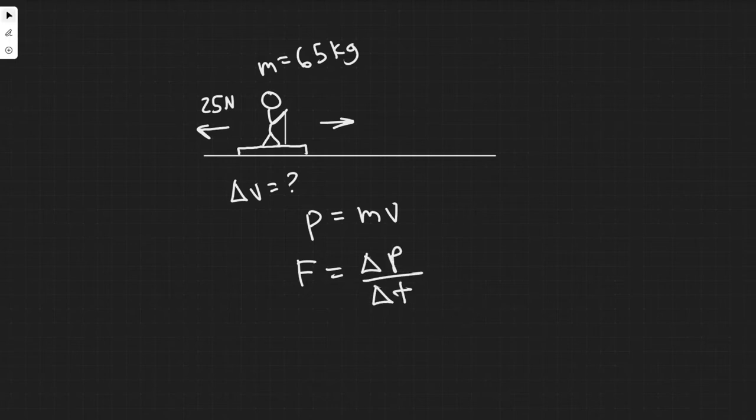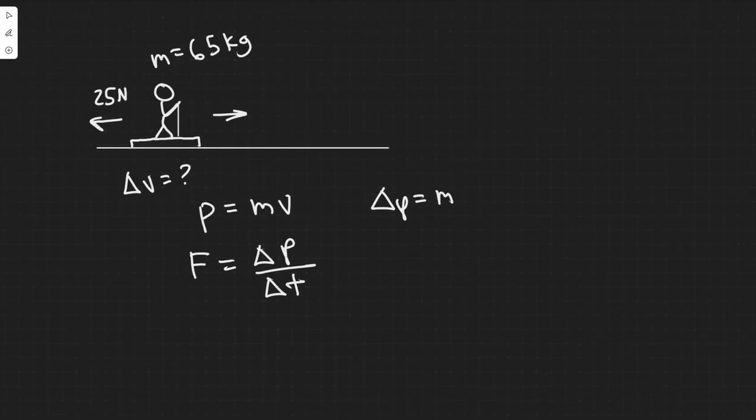What we're trying to solve for is change in velocity. The change in momentum is equal to mass because it's a constant and then you multiply it by the change in velocity because that's what actually changes the momentum. So change in momentum equals mass times change in velocity.